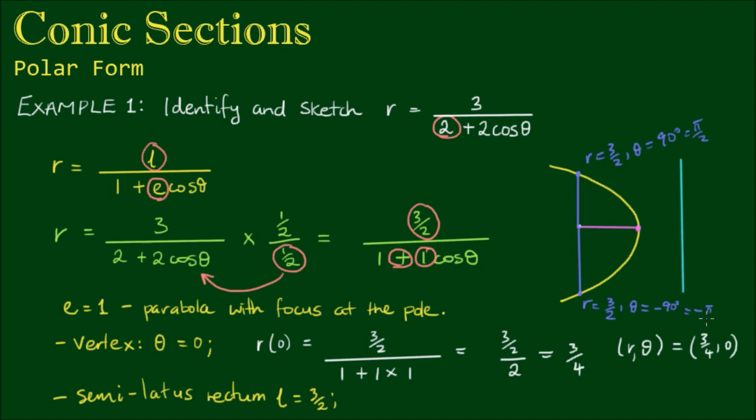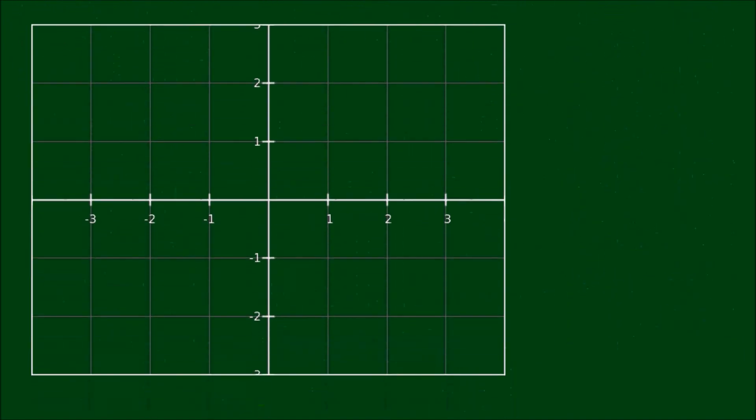Okay, so pi on 2 of course are the angles in radians. So again noting these down we have the polar coordinates R theta equals 3 on 2 plus or minus the angle pi on 2. Alright, so with all this I think we can make a good sketch of this parabola now.